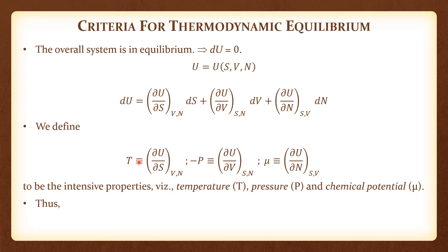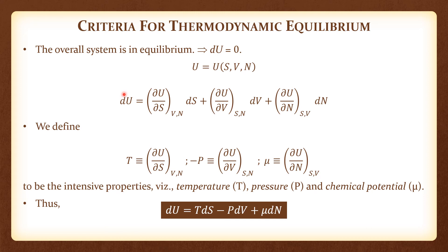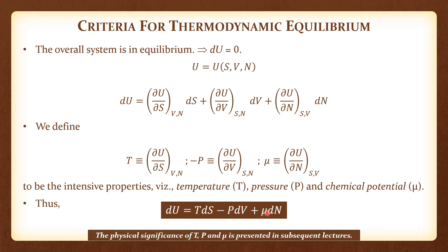Temperature, by definition, is ∂U/∂S at constant V and N. Pressure, by definition, is −∂U/∂V at constant S and N. Chemical potential, by definition, is ∂U/∂N at constant S and V. Thus, I can write the total differential as dU = TdS − PdV + μdN. The physical significance of T, P, and μ, as well as S, will be presented in subsequent lectures.